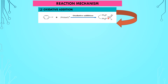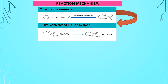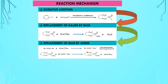The second step is the replacement of the halide by the base. In this step the halide is replaced by a strong base — here you can see the halide is replaced by the base, which is tert-butoxide. The third step is the replacement of the base by the amine. Initially the base reacts with the amine to form a sodium amide strong base, which undergoes reaction with the complex and the base is replaced by the amine.